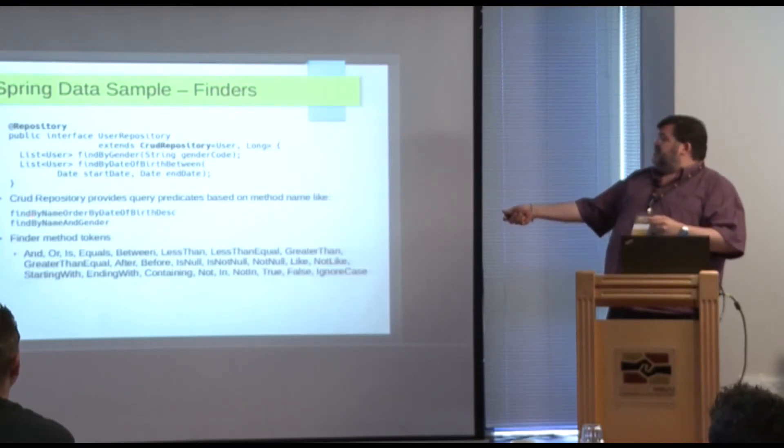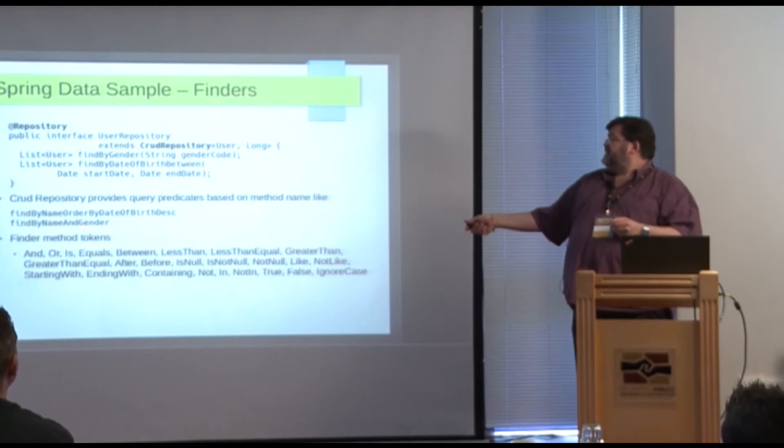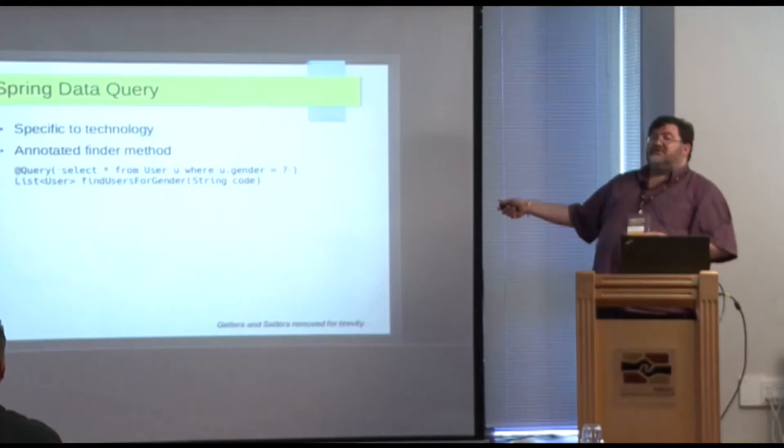Here are some other examples: find by name order by date of birth descending, or find by name and gender. Here are some of the tokens you can use: And, Or, Is, Equals, LessThan, LessThanEqual, GreaterThan, and a whole long list. You just write a method with that name and when you call it, the predicate created at initialization gets used to create a query to the database — specific to the technology.